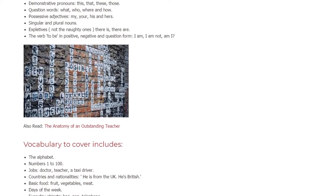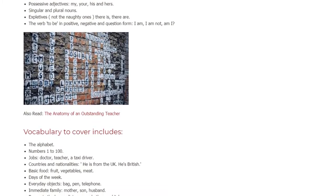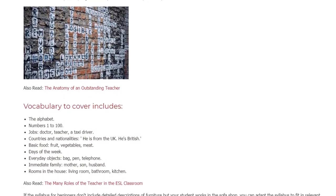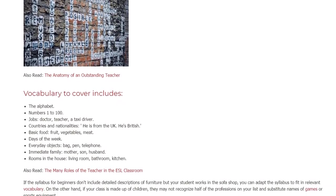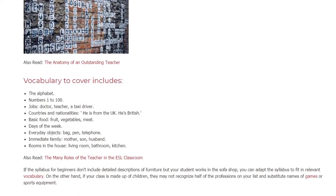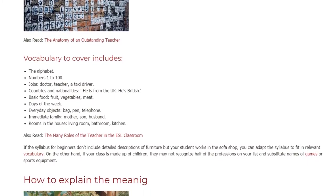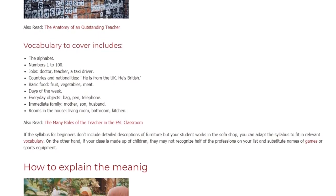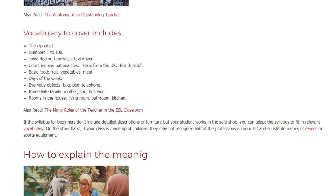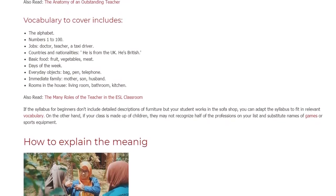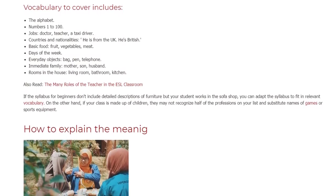Vocabulary to cover includes: the alphabet; numbers 1 to 100; jobs — doctor, teacher, taxi driver; countries and nationalities — he is from the UK, he's British; basic food — fruit, vegetables, meat; days of the week; everyday objects — bag, pen, telephone; immediate family — mother, son, husband; and rooms in the house — living room, bathroom, kitchen. If the syllabus for beginners doesn't include detailed descriptions of furniture but your student works in a sofa shop, you can adapt the syllabus to fit in relevant vocabulary. On the other hand, if your class is made up of children, they may not recognize half of the professions on your list — substitute names of games or sports equipment instead.